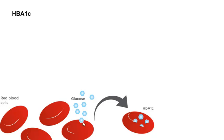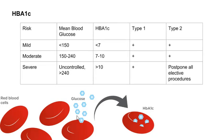Here's a chart straight from the MISH textbook. It classifies patients in terms of risk: mild, moderate, and severe. Those with an HbA1c of 7 or lower are at mild risk for complications. Those in the range of 7 to 10 are at moderate risk. And those with an HbA1c higher than 10 are said to be at severe risk of implant complications.